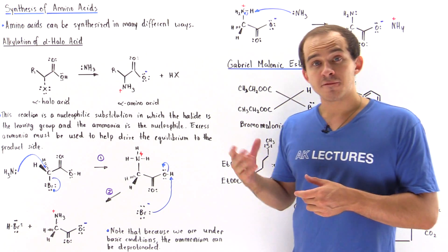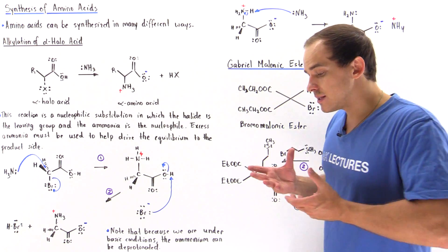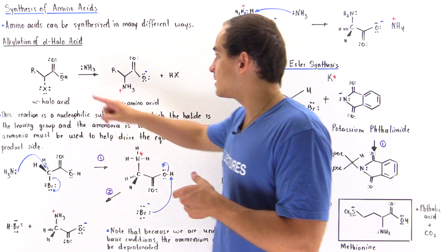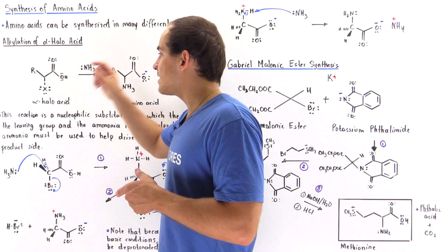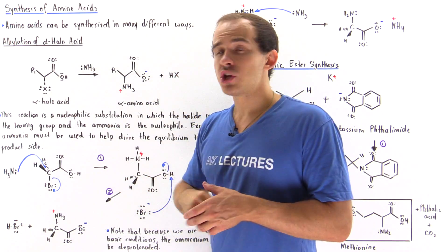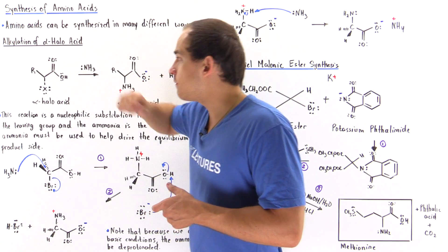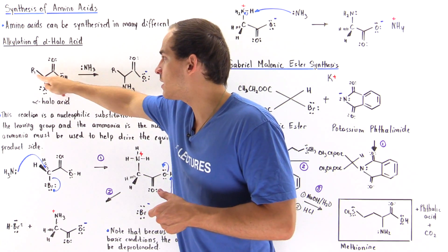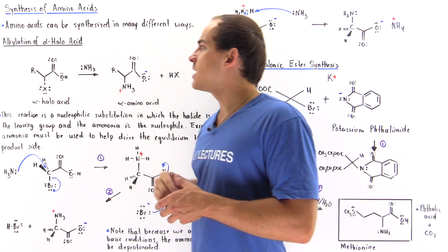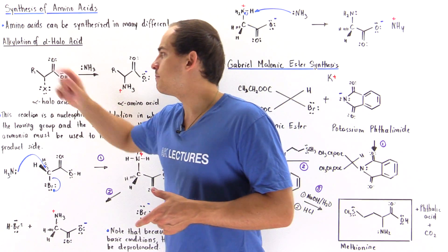So what exactly is an alpha-haloacid? Well, it's basically a carboxylic acid. So we have the carboxylic acid group and we have a halogen attached to the alpha-carbon of this group, to this carbon here. We also have some type of side chain, some type of R group.